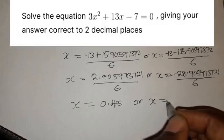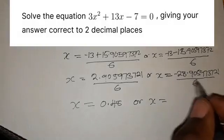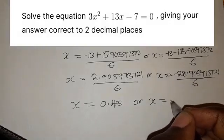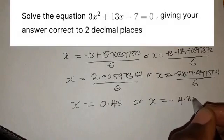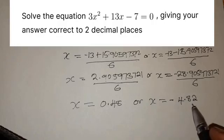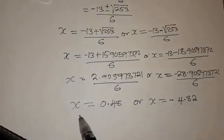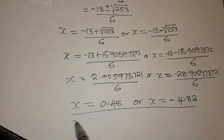Or x equals, when you divide this, you are going to have negative 4.82. This has been rounded off to 2 decimal places. So these are the solutions.